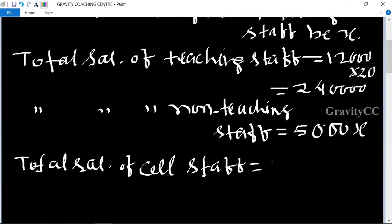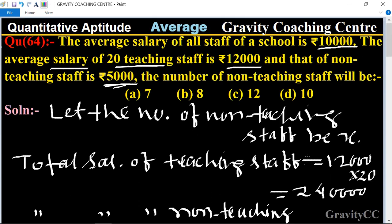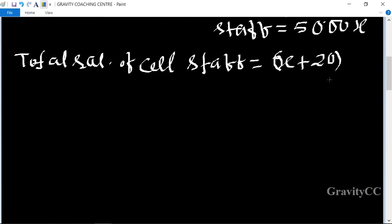teaching staff and non-teaching staff, so let's put (x + 20) into this average is 10,000.